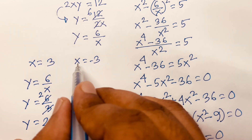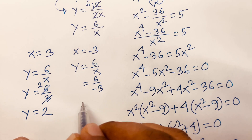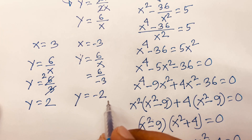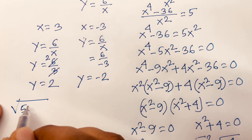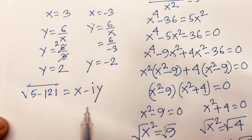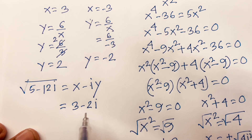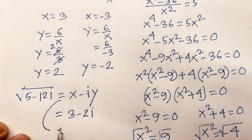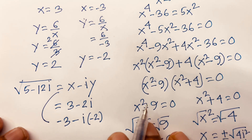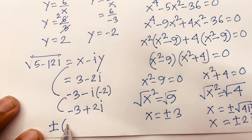When x equals minus 3, y equals 6 over minus 3 equals minus 2. Since our equation is square root of (5 minus 12i) equals x minus iy, when x equals 3, y equals 2, we get 3 minus 2i. When x equals minus 3, y equals minus 2, we get minus 3 minus i(minus 2) equals minus 3 plus 2i. So the final answer is plus or minus (3 minus 2i).